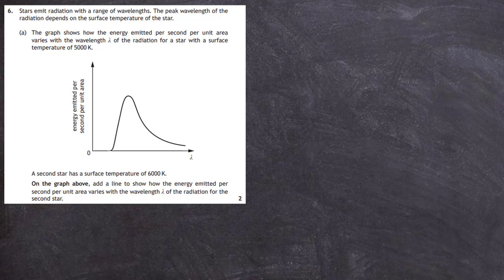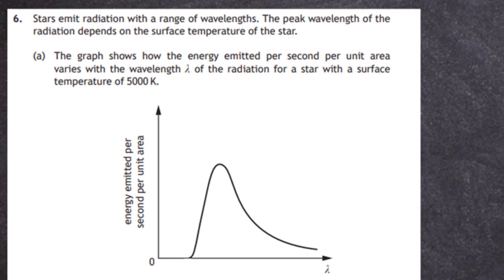Question 6 from the 2019 Higher Physics SQA exam, section 2. Stars emit radiation with a range of wavelengths. The peak wavelength of the radiation depends on the surface temperature of the star. The graph shows how the energy emitted per second per unit area varies with the wavelength lambda of the radiation.